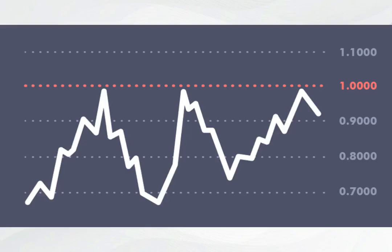Looking at the chart on your screen, you can see that whenever price gets to that 1.0000 level, it bounces and moves back down. That level is called a resistance level. This is how we use previous price action to predict what will happen next — the next time you see something like this, you know that it's a resistance level when price gets to a certain level and comes back down.